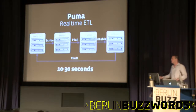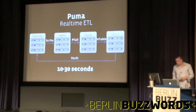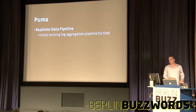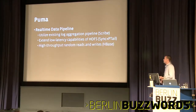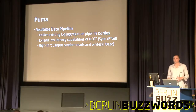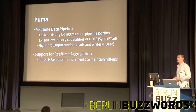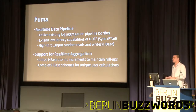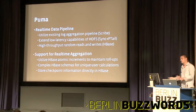It's very highly reliable — each step in the chain is basically fault-tolerant and highly available. Puma is the real-time data pipeline. We're utilizing all the existing log aggregation stuff, so there are no changes on the front end. We're extending the low-latency capabilities of HDFS with the sync and ptail, and then we're utilizing HBase for its high-throughput random reads and writes. This gives us support for real-time aggregations. We heavily utilize HBase atomic increment operations to maintain rollups in real-time, and we're building complex HBase schemas to do things like unique users. We store all checkpoint information back into HBase, so HBase is the only persistent store.